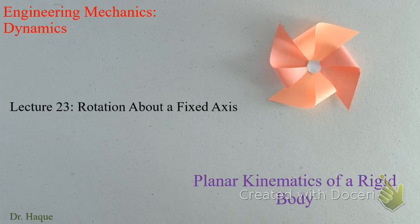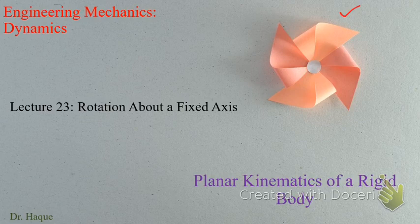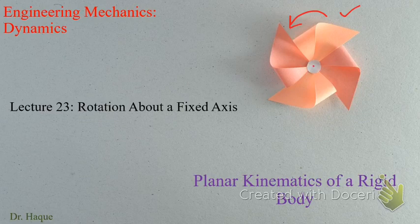Welcome. This is our third lecture on Chapter 16. Today we're going to talk about rotation about a fixed axis. If you see this paper mill — I think most of you have made one when you were kids — this paper mill is rotating, and we assume it is rotating in this direction. It has an axis of rotation perpendicular to the surface. This is an example of rotation about a fixed axis.